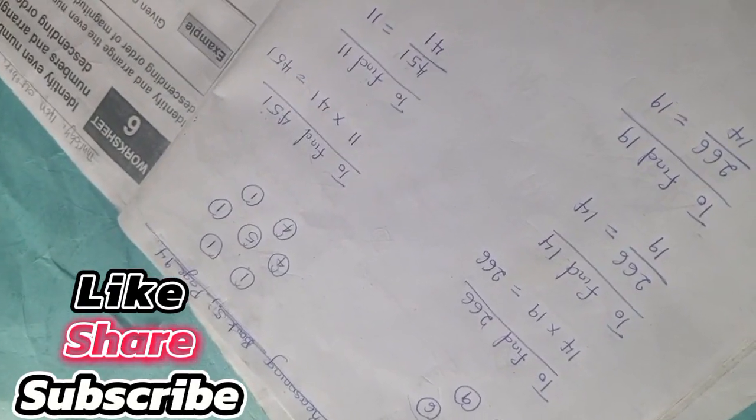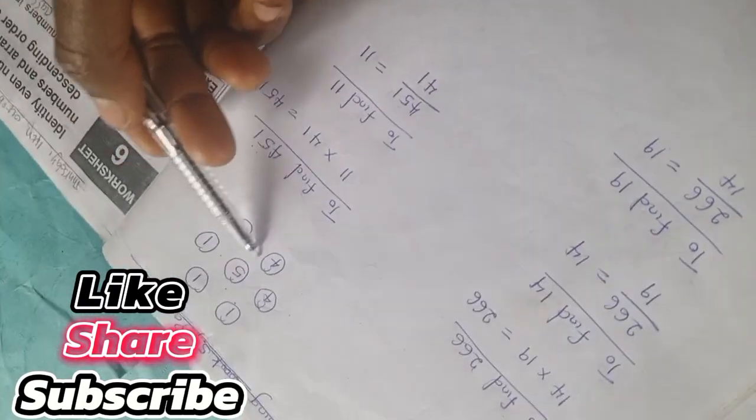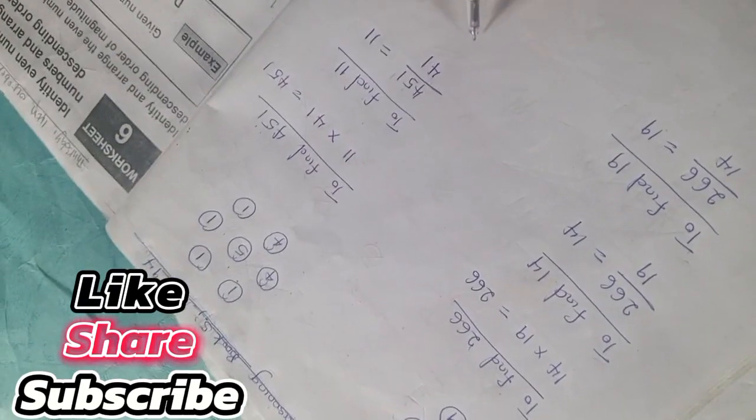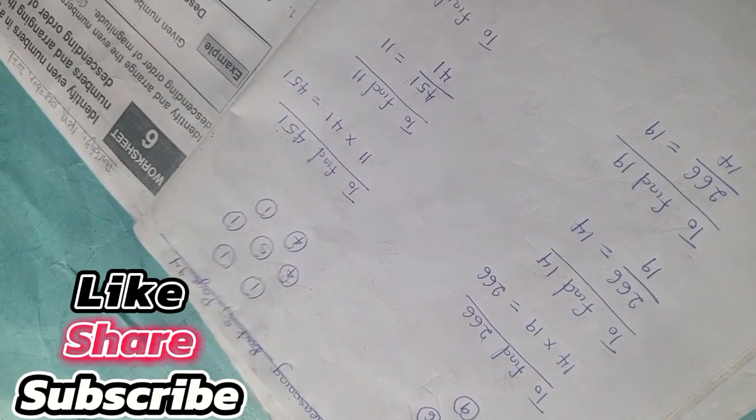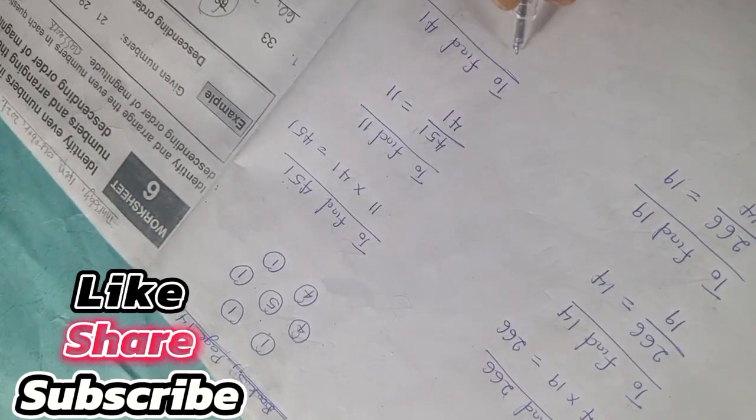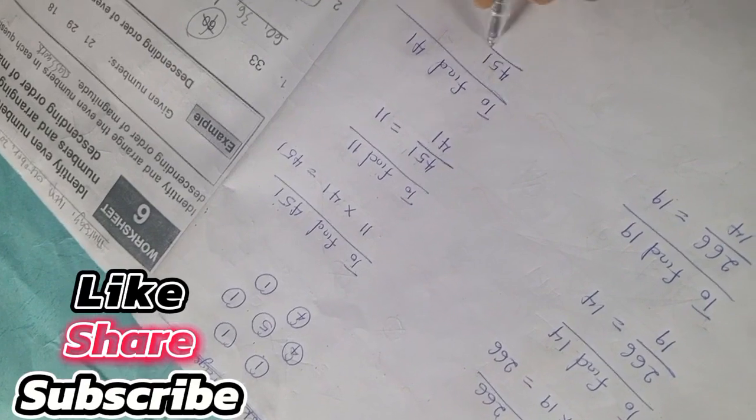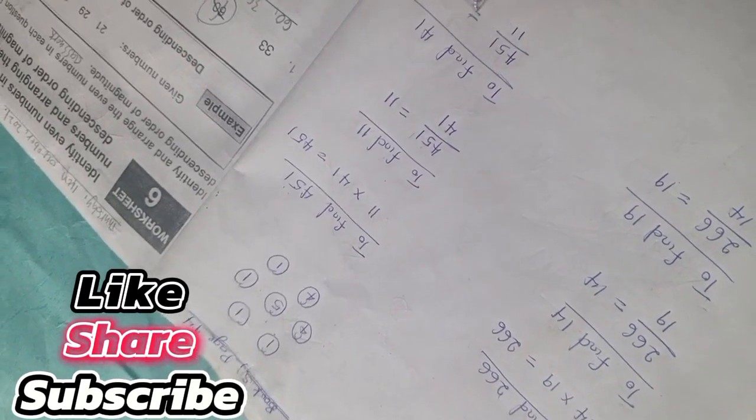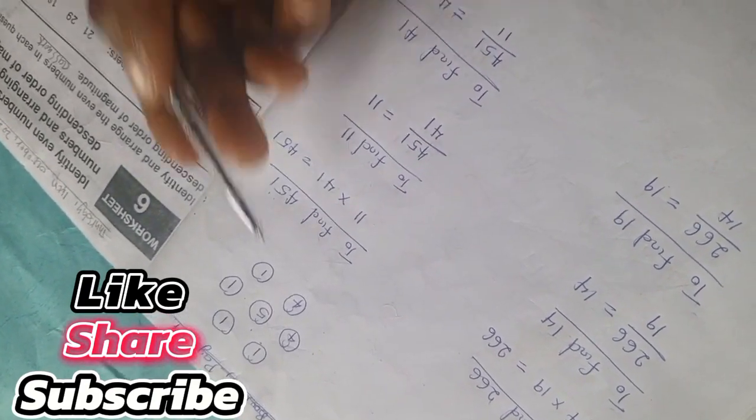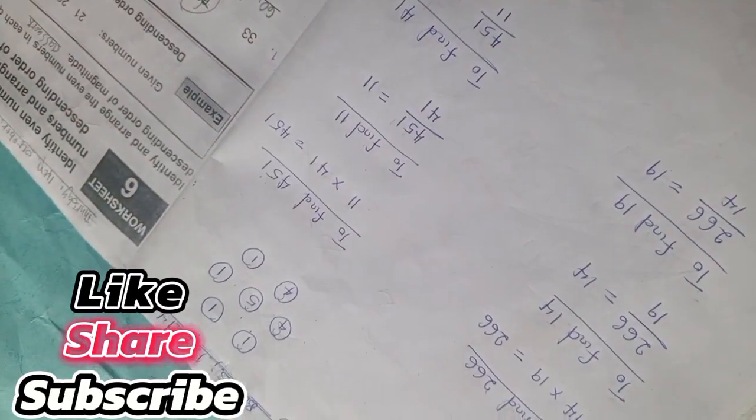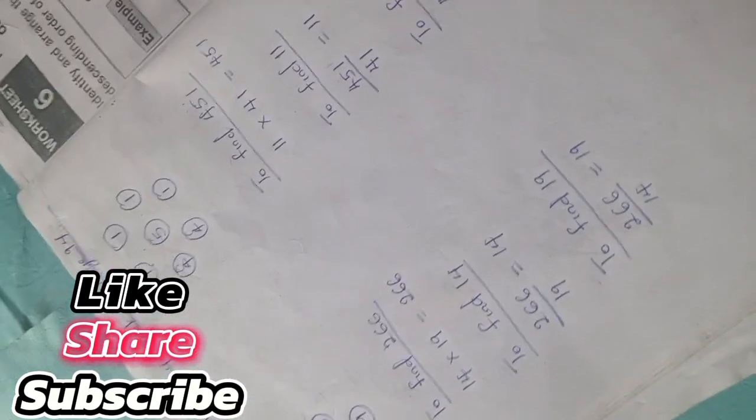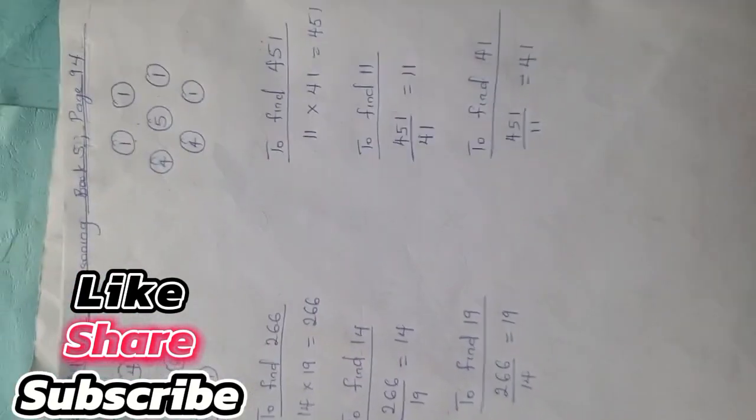To find 41, you simply have 451 divided by 11 and you have 41. So if you're looking for four, simply replace the number. Don't forget to subscribe to this channel for more quantitative reasoning solutions.